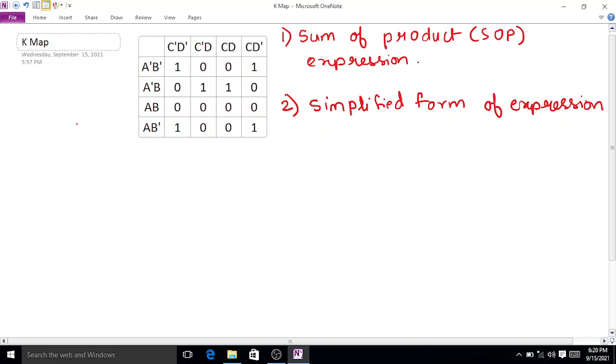Welcome friends. In this example, we are going to find the sum of product expression for the given K-map and also find the simplified form of Boolean expression.